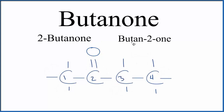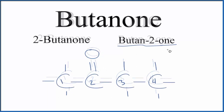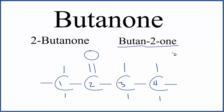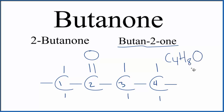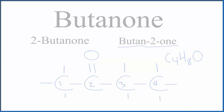The preferred IUPAC name is butan-2-one. If you wanted to write the molecular formula, you could count the carbons and hydrogens and you get C4H8O. This is Dr. B — thanks for watching.